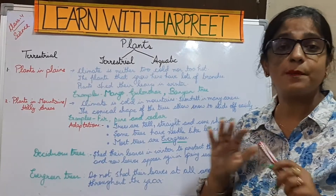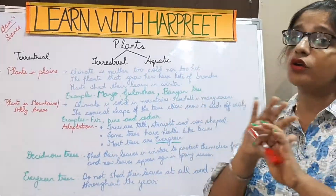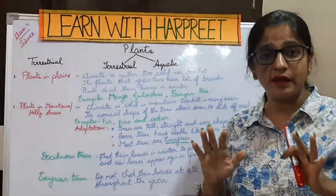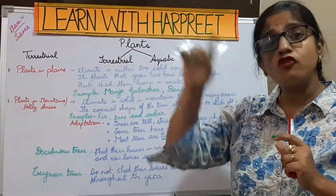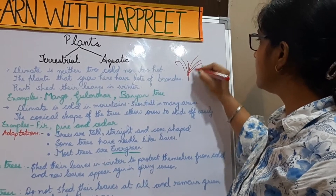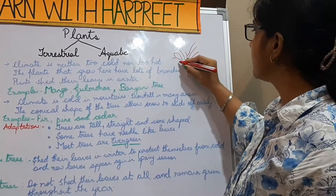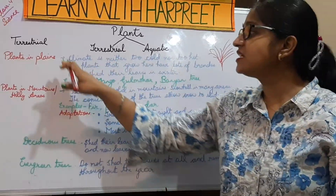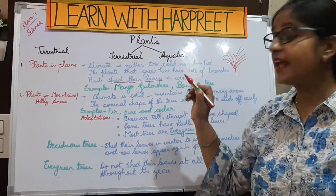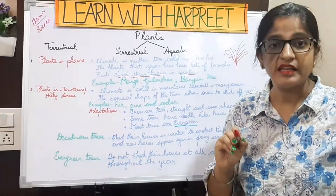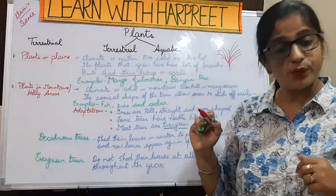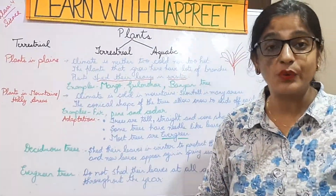Let's come to the point — plants in plains. The climate in the plains is neither too cold nor too hot. The plants that grow here have lots of branches growing from the stem. These plants shed their leaves in winter season. Examples are mango tree, gulmohar tree, and banyan tree.